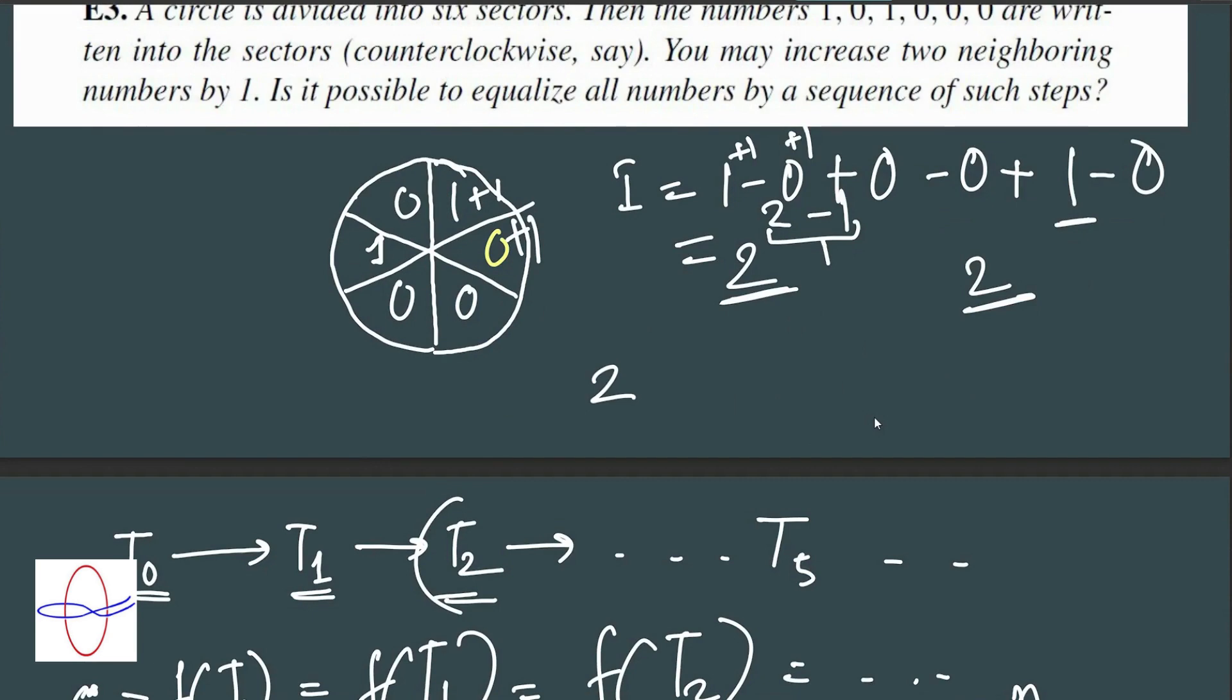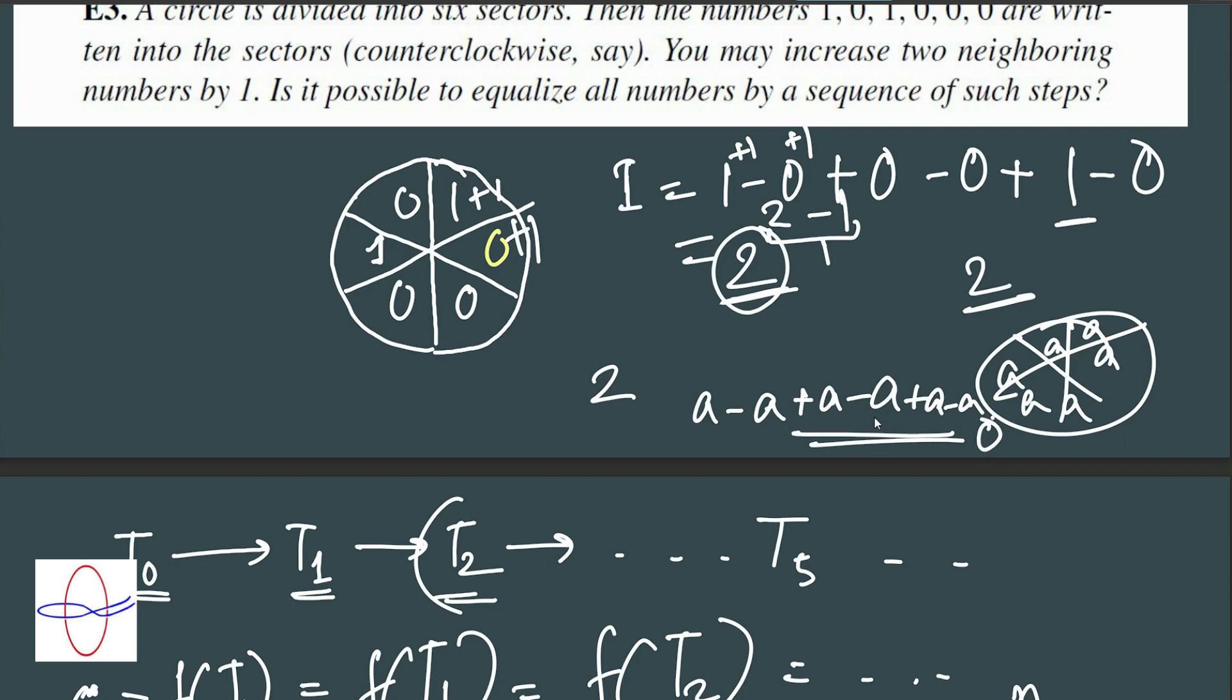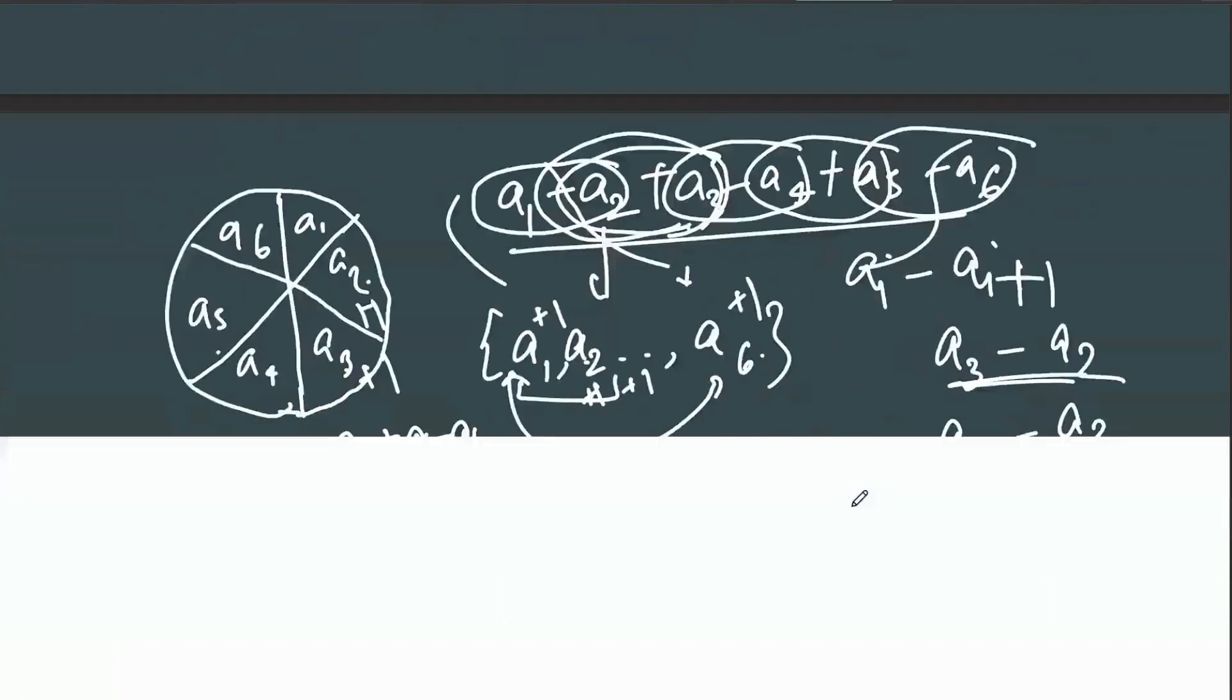So initially, the value is 2. What would happen if it was possible to get to a state where every single number was the same? In that case, doesn't the value of this function, a1 minus a2 and so on, doesn't this become 0? So this end state is not possible. You cannot achieve this state simply by virtue of the fact that the invariant has to always be 2. It cannot be 0. So the answer to this question is no. And we're done. This is the problem. And I hope I've made this idea clear.